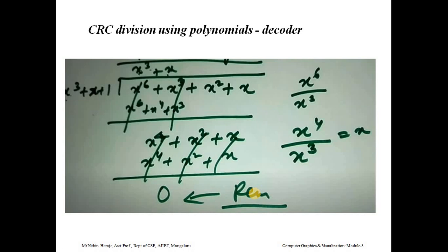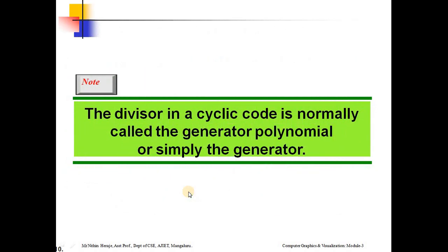If the remainder is 0, you can accept the data word — meaning there was no bit error in the message. This is how you work with polynomials in CRC, both at the encoder end and at the decoder end. Ultimately it depends on the remainder: if it is 0, accept the data word; otherwise, reject the data word.